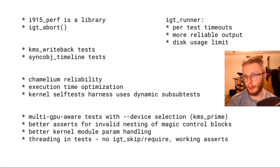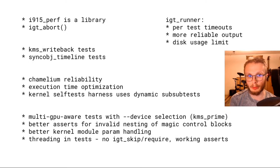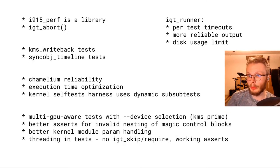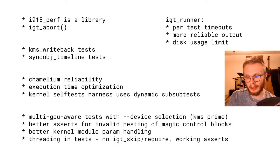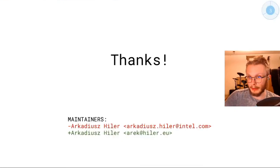There are also a couple of improvements in igt_runner: we have a per-test timeout, which was used in the execution time optimization effort to hunt tests that take too long. We have more reliable output with sync points added to ensure results are actually written back to disk, and we introduced a switch to enable usage limits. That's quite a lot for a year — thanks for hanging by, and that's it for my talk.